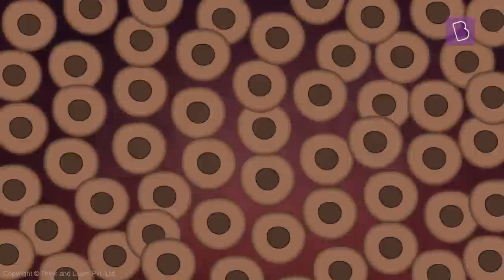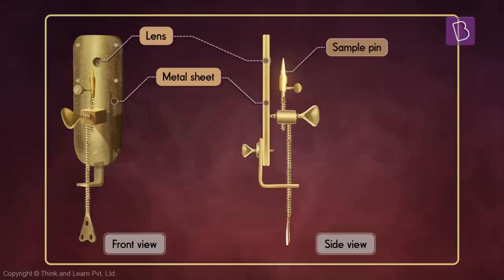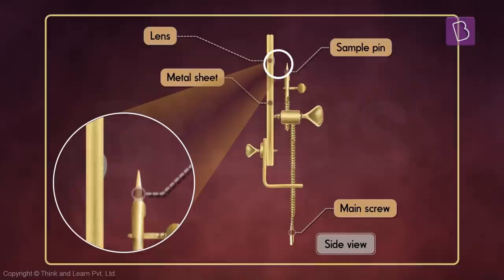He made really thin lenses which he embedded into a metal sheet with a small opening in the center to observe the sample. He would apply the sample on the sample pin, and by turning the screw called the main screw, he would adjust the height of the sample so it was exactly where he could observe it.